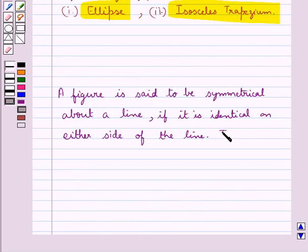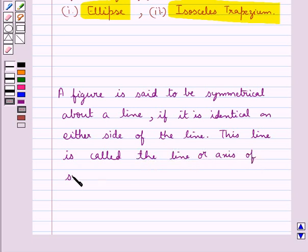And this line is called the line or axis of symmetry. This is the key idea for this question.